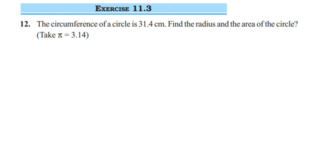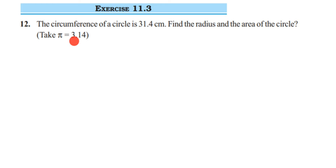Here is a question on Exercise 11.3, 12th question. The circumference of a circle is 31.4 centimeters. Find the radius and the area of the circle. Take pi equal to 3.14. They have given the circumference of the circle, which is 31.4 centimeters. We have to find out the radius and the area.